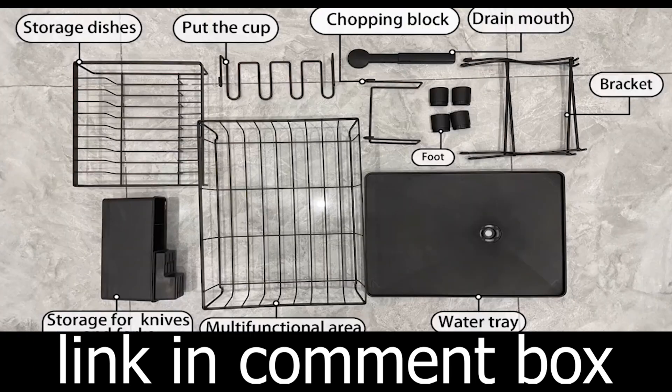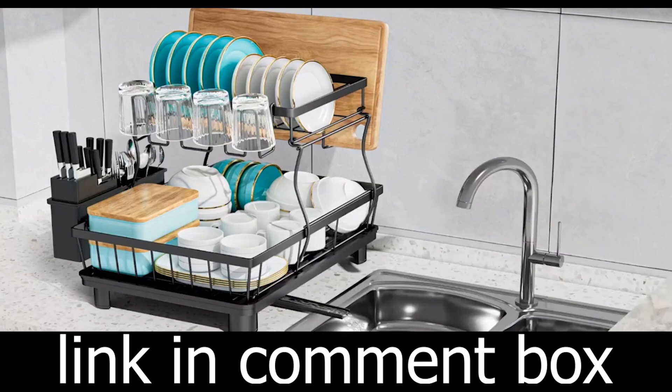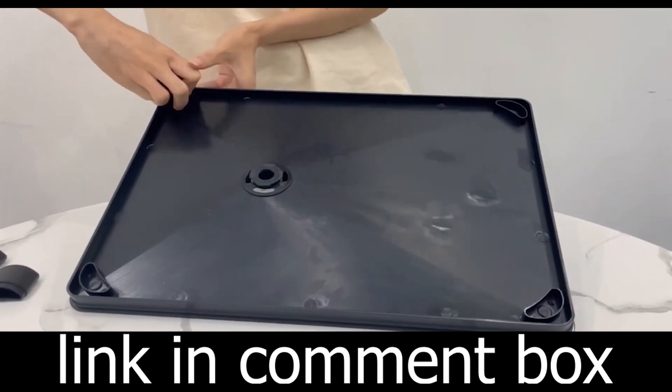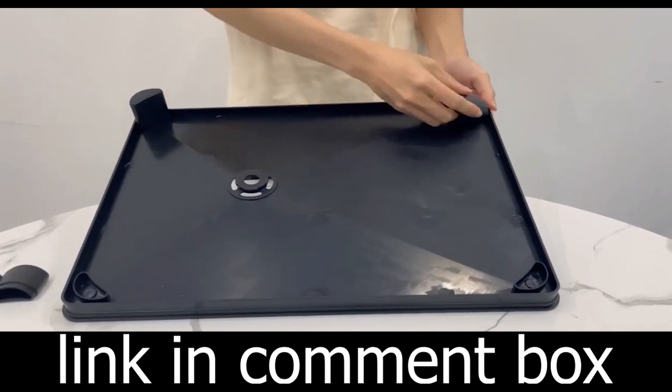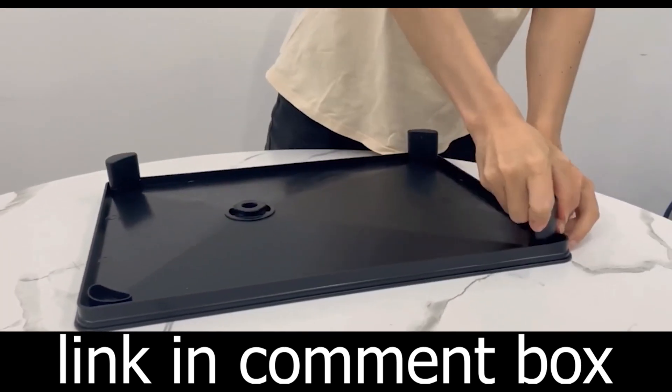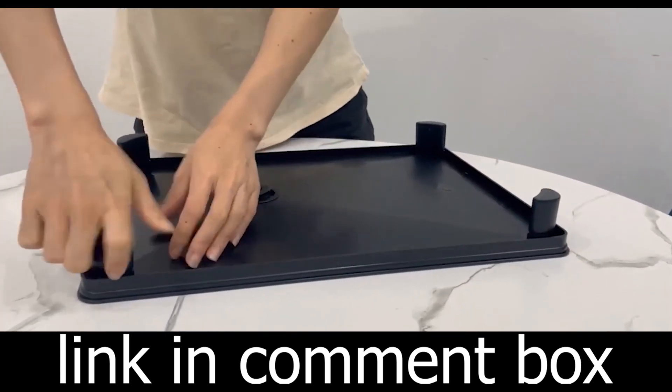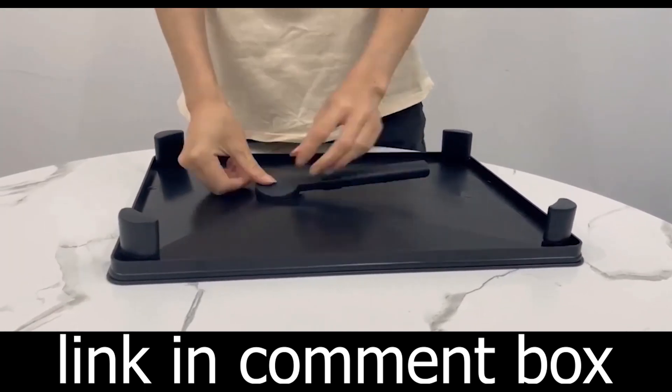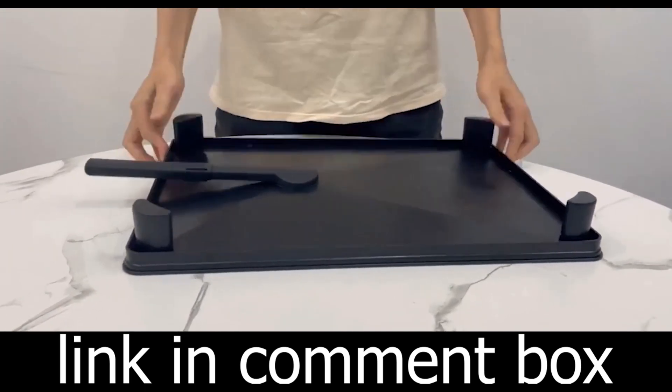Worried about water spilling onto your countertop? Don't be! This dish drying rack features an auto-draining drainboard with central drainage holes and a swivel spout. This innovative design ensures that water flows directly into your sink, keeping your countertops clean and dry.